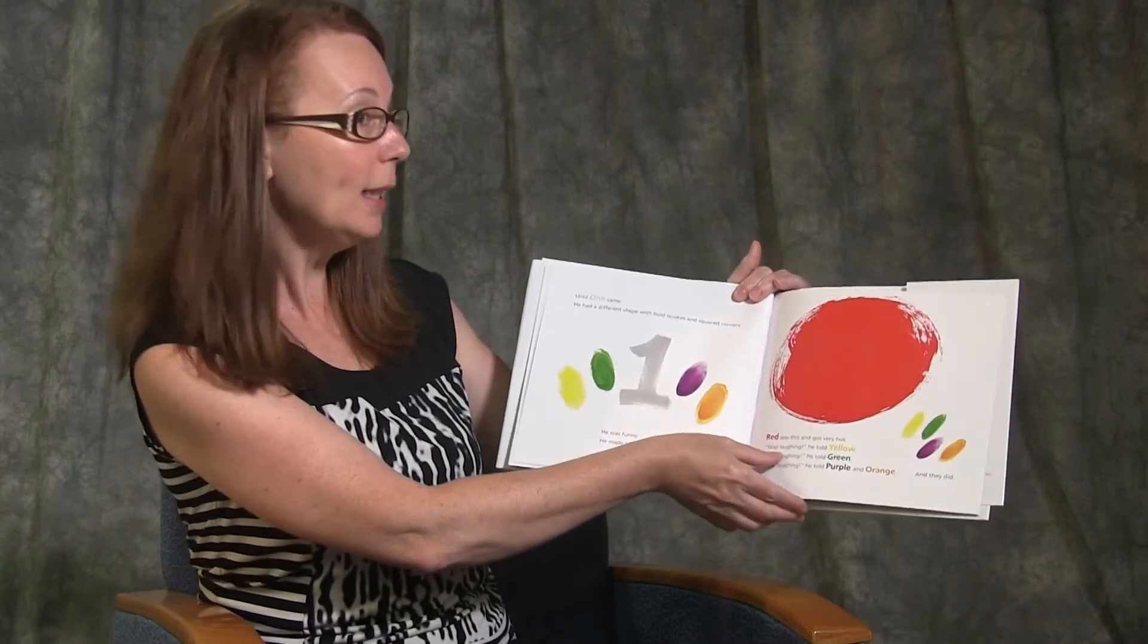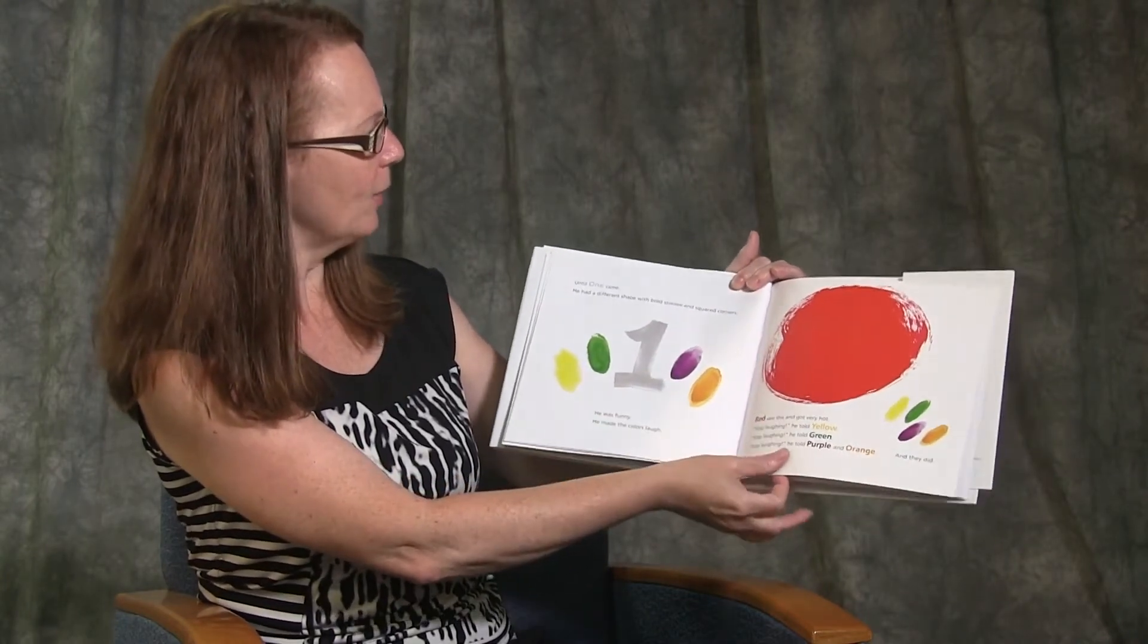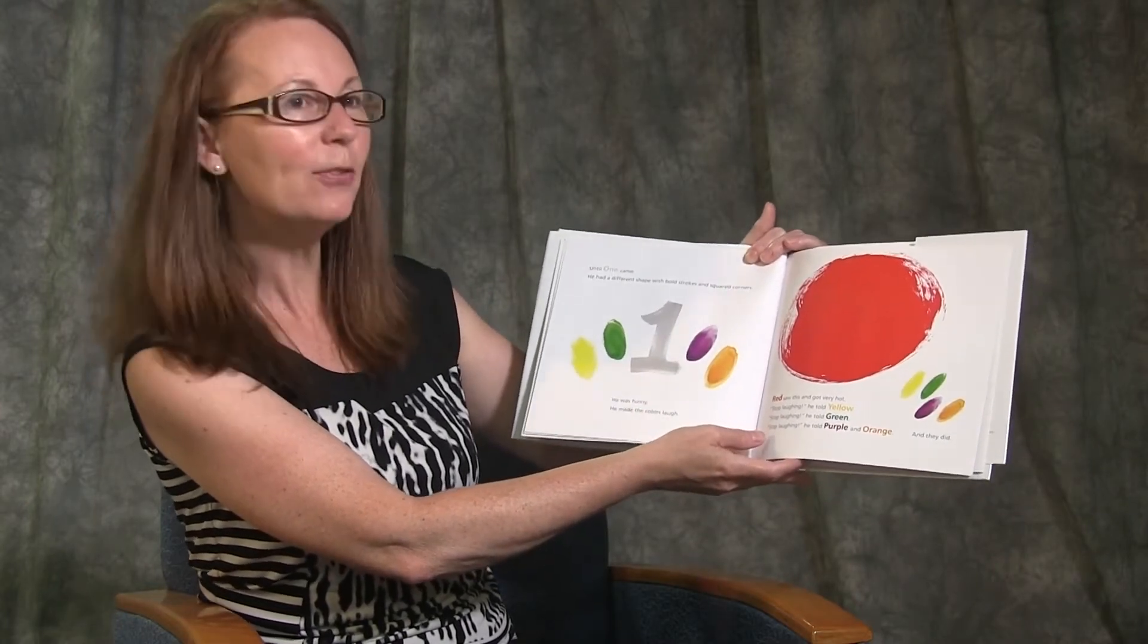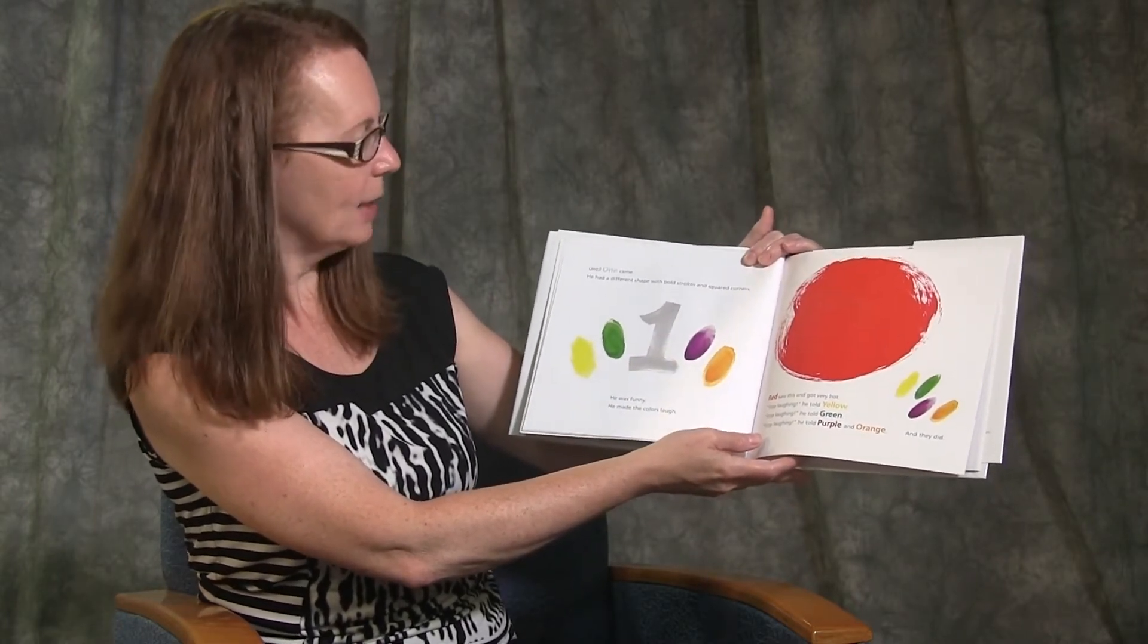Until one came. He had a different shape with bold strokes and squared corners. He was funny. He made the colours laugh.